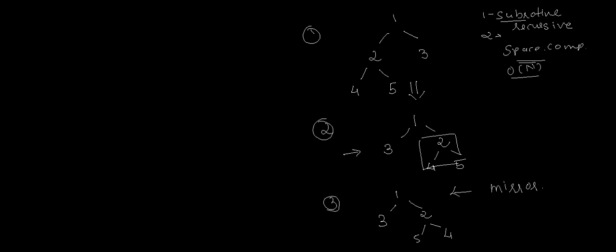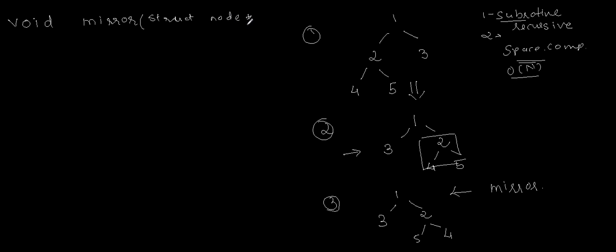If we want to code for this, since we are not creating any new tree and not returning any node, we don't need to return anything. So we'll start the function with void. Void mirror takes struct node star root as its parameter.